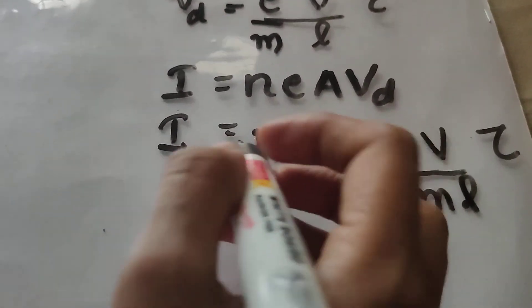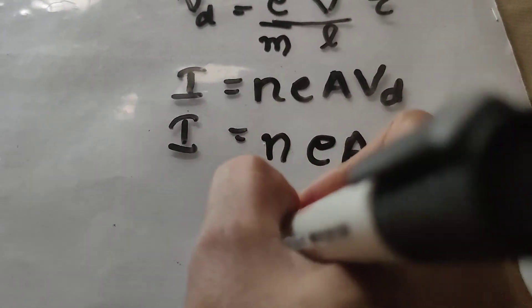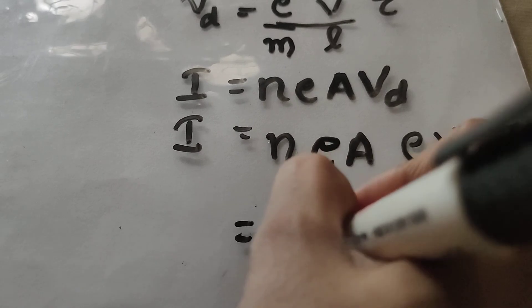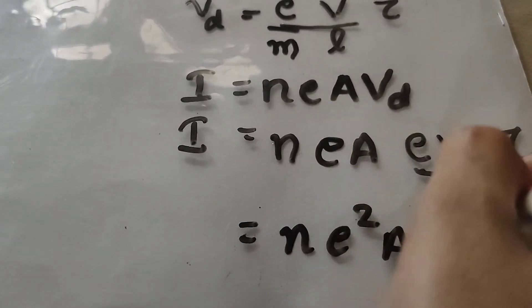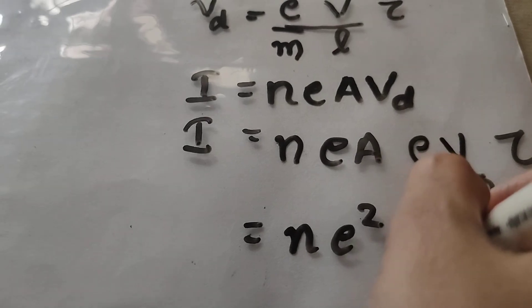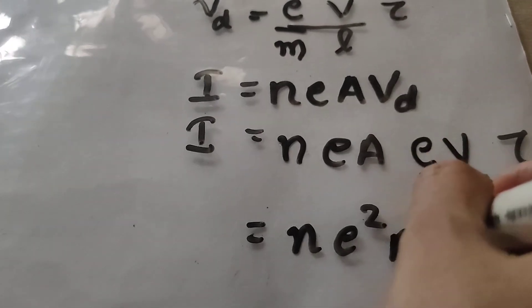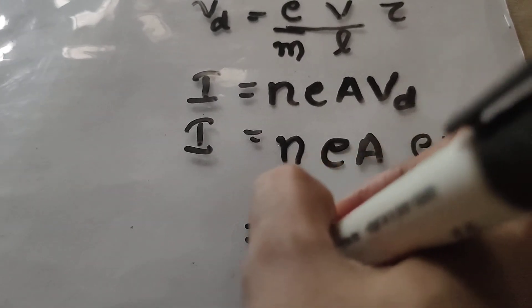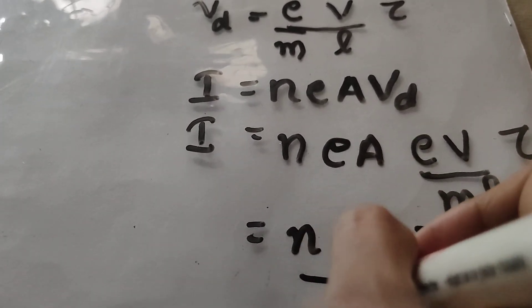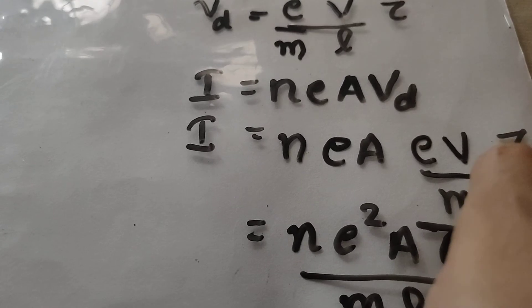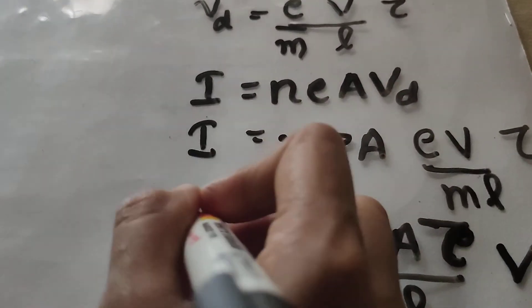So, it is equal to N, e into e, e square, A, sorry not e, it is tau, tau by m, L into V.